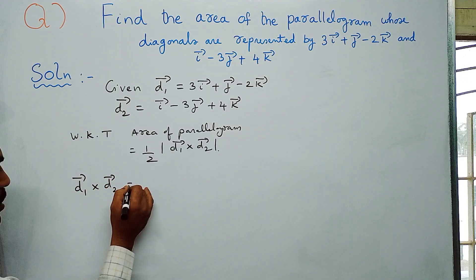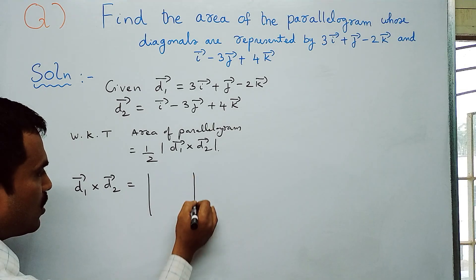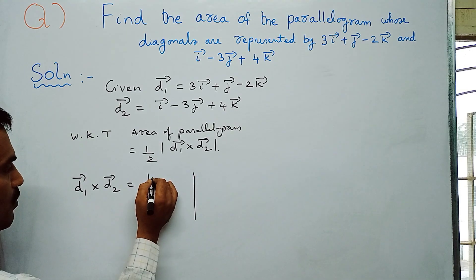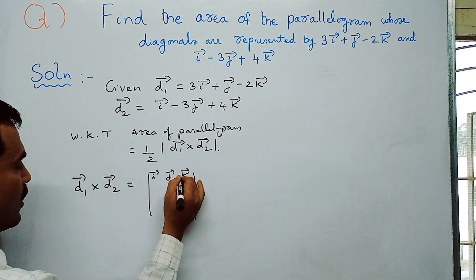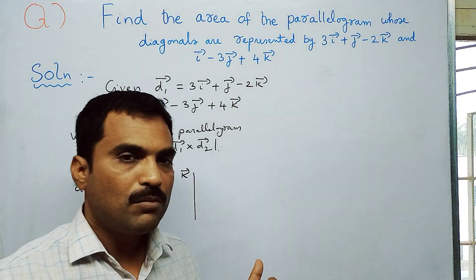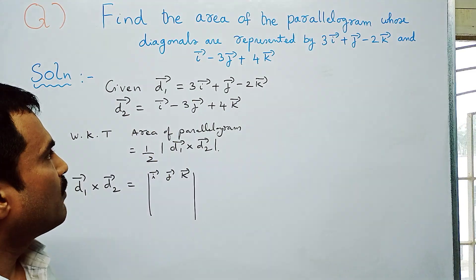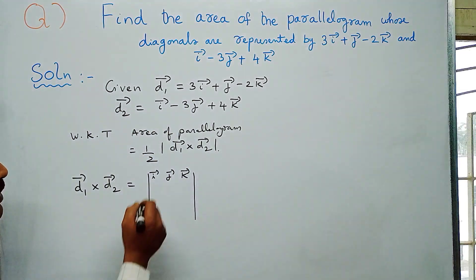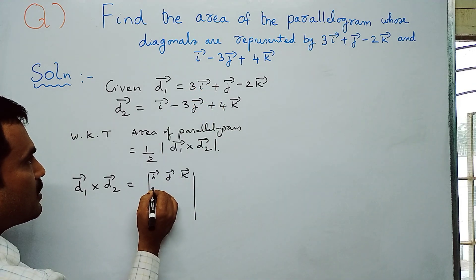To compute d1̅ × d2̅, we set up a 3×3 determinant. The first row contains the unit vectors i̅, j̅, k̅. The second row contains the coefficients of d1̅.